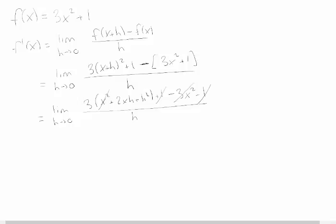So what I'm left with looks like this. Now I can cancel off these h's. And now I see the limit as h goes to 0 of 6x plus 3h.